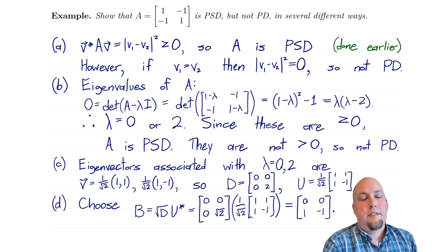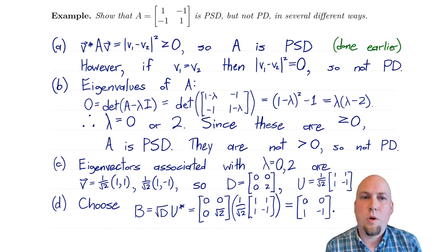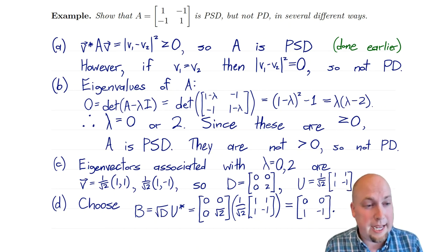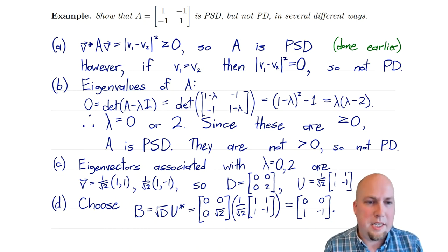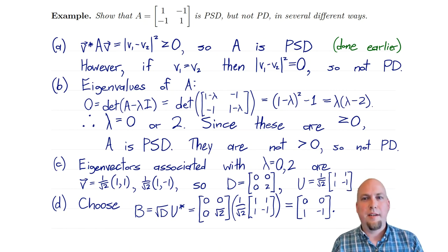That does it for today. Next class, we're going to look at larger matrices — how do you check positive semi-definiteness for three-by-three and larger matrices? We'll look at a couple of methods that are more efficient than those discussed today, and we'll start looking at other properties of positive semi-definite matrices, including why we care about them in the first place. See you then.